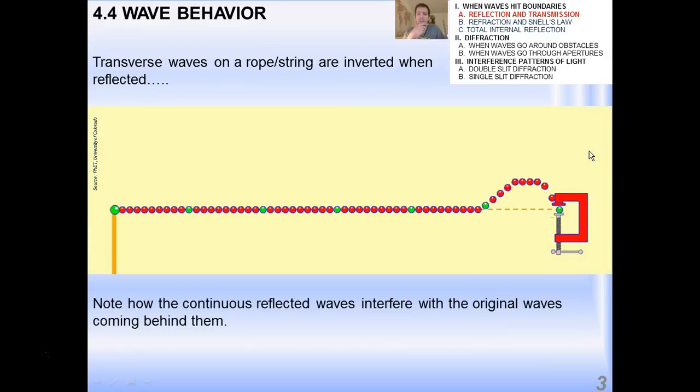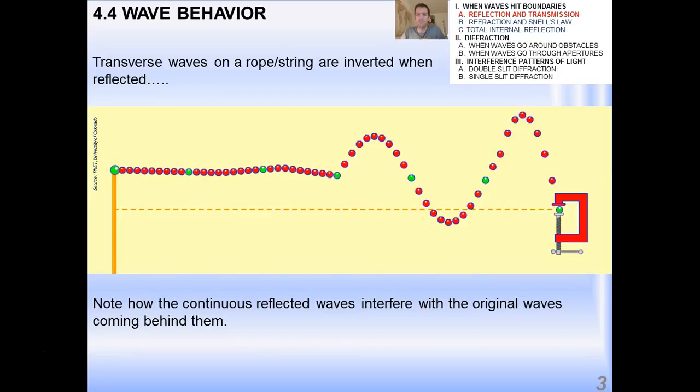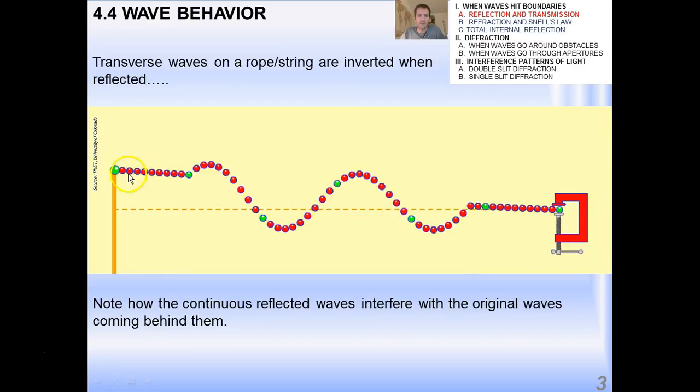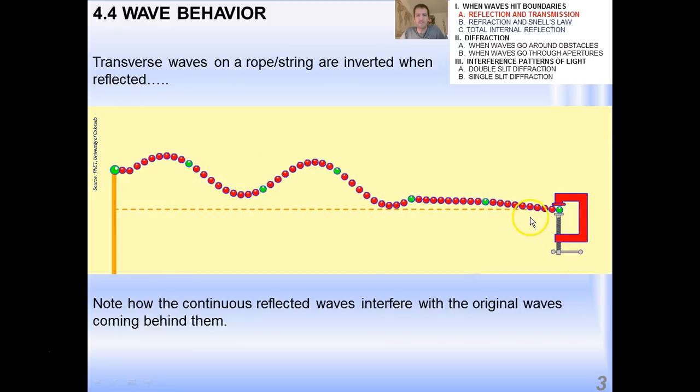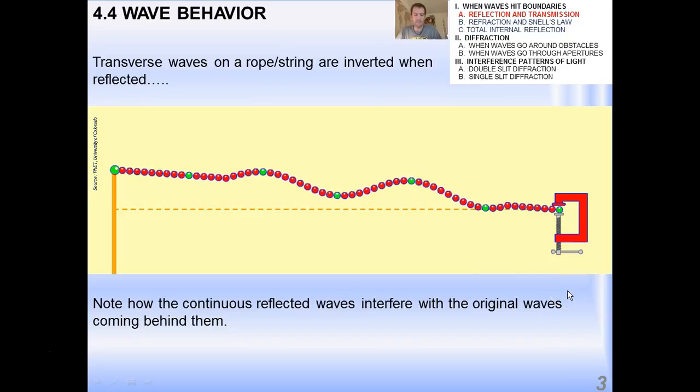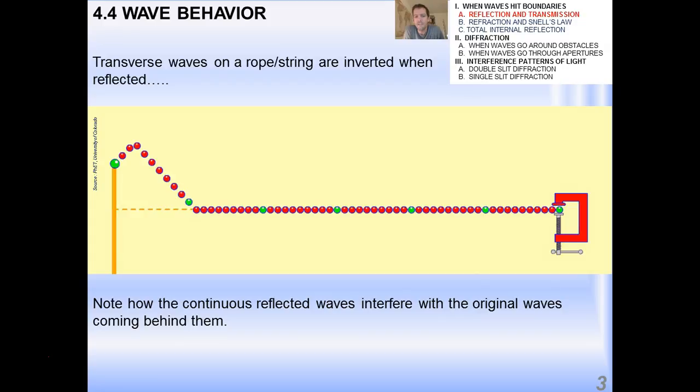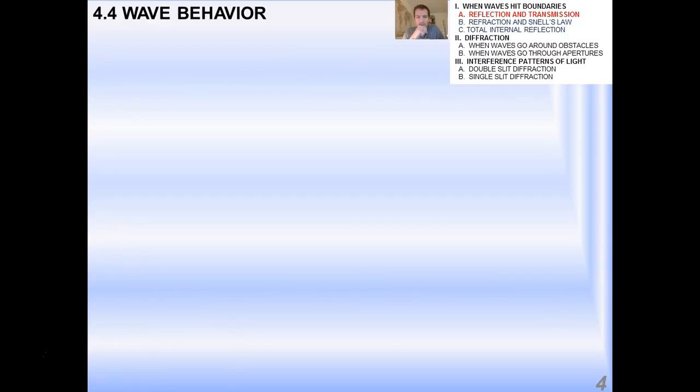Now, if you're talking about waves on a string, something really interesting happens, and that is that the transverse waves, in particular, become inverted when they're reflected. And we'll talk about this more maybe later, and I'll see this in class with slinkies. Notice how the continuous reflected waves interfere with the original waves coming behind them. This will be very important when we talk about section 4.5, which is standing waves coming up next.